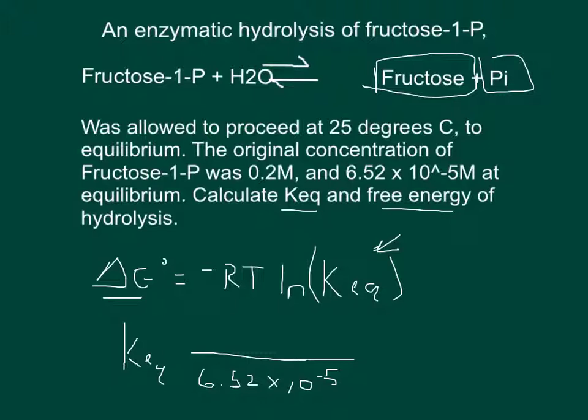So the amount of fructose produced would be the amount of moles of fructose 1-phosphate that we started with, minus the amount of moles that we had left. So 6.52 times 10 to the negative 5. And what you actually get for that is the concentration of fructose.